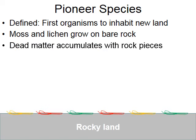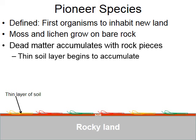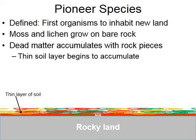As time passes, moss and lichen live, reproduce, and die, and their dead matter accumulates along with pieces of crumbling rocks. Over time this accumulation of dead organic matter from moss and lichen, and the crumbling of rocks, forms a real thin layer of soil. Not enough soil for big trees like redwoods or oaks to grow, but enough to stimulate the production of even more moss and lichen. So what was once a vast rocky barren wasteland is slowly starting to show signs of life.